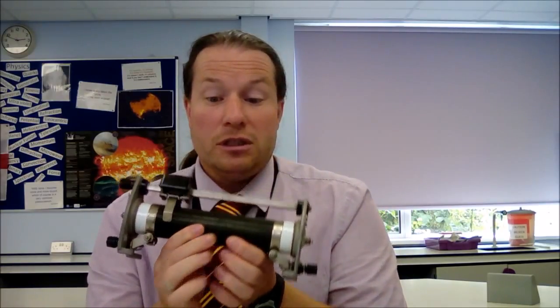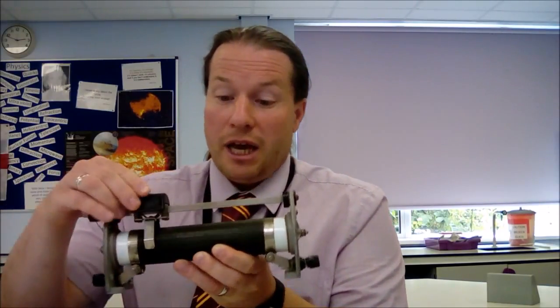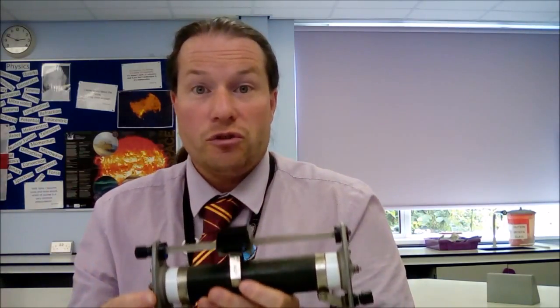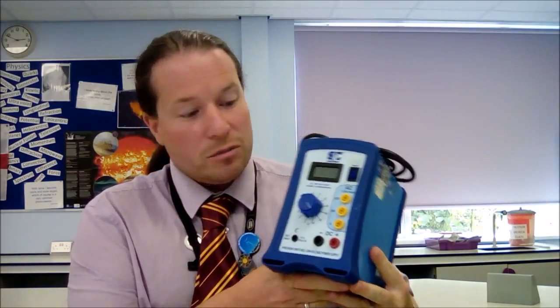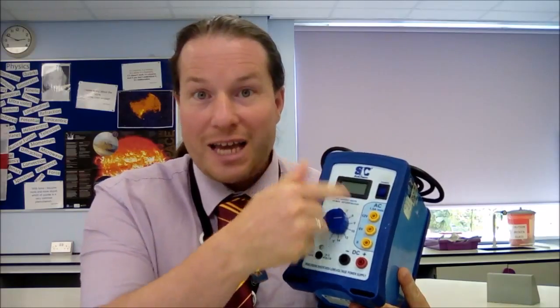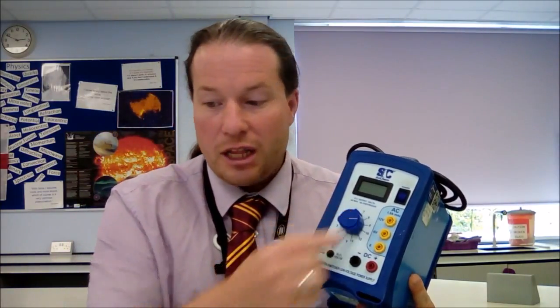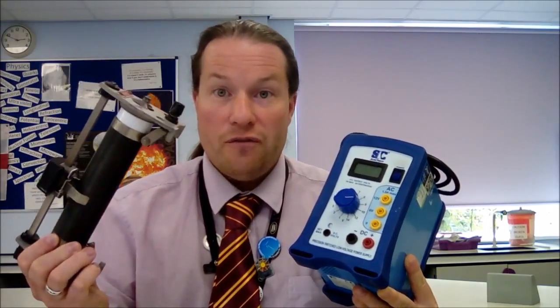Now the instructions specify you need one of these beauties, a rheostat or variable resistor. As you change the resistance here, it enables us to control the current through our circuit. Now I'm not going to be using that today, and there's a reason for this. I've got one of these fancy power supplies. It has the rheostat already built in here, and that enables me to control the current and voltage that is being applied to my lamp or my non-ohmic conductor. So this dial here does the job of this.